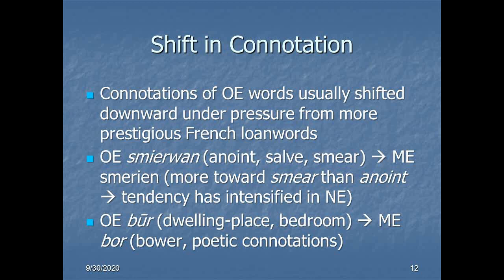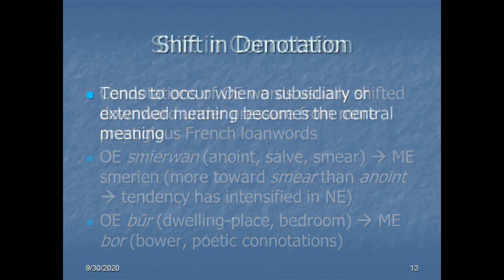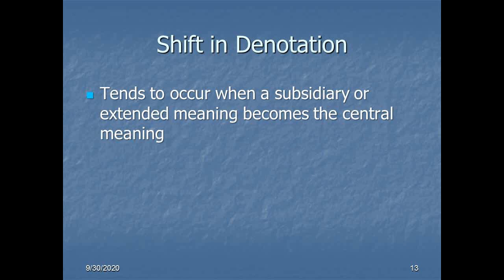Another example of changed connotations — and this isn't necessarily downward — is the word 'bur,' which simply meant dwelling place or bedroom. In Middle English, 'bur' is bower, and it has poetic and sometimes erotic connotations as well, but is no longer a general dwelling place. It's got that specific poetic and sometimes erotic connotation that in Old English it simply did not have. As for changes in denotation, this is simply when either a subsidiary or extended meaning — something other than the primary meaning of the word — becomes its new primary meaning. The old meaning is displaced by something broadly related to it but peripheral, and that periphery moves to the center of the understanding of the word.